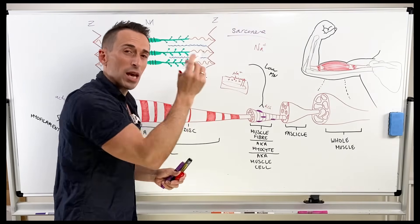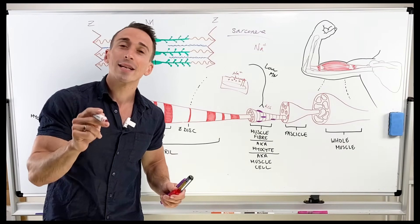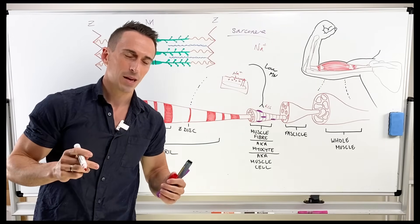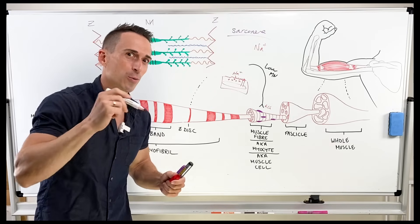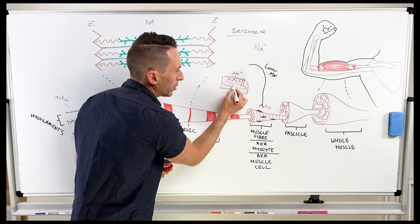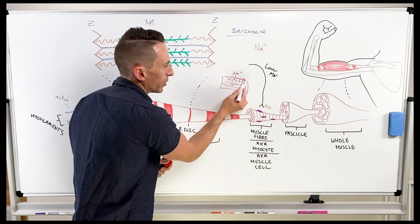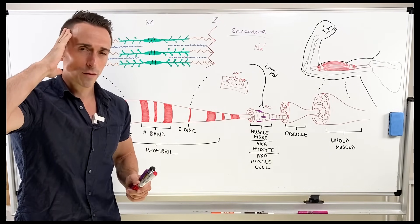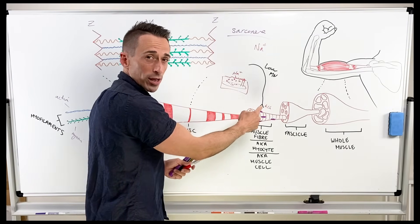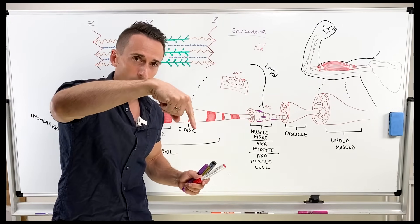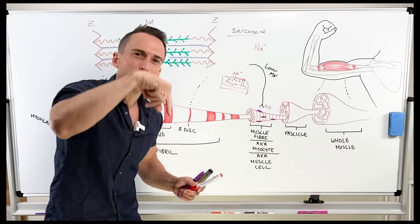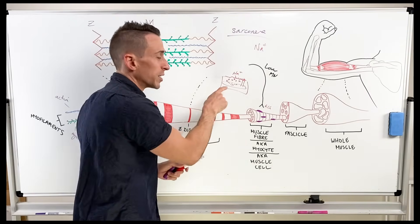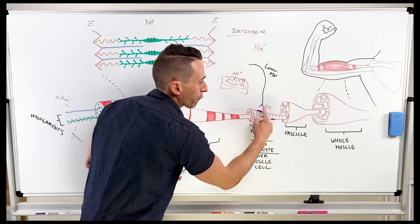The depolarization going down the T-tubules reaches something called the sarcoplasmic reticulum — that's the endoplasmic reticulum for muscle fibres. The sarcoplasmic reticulum stores calcium. Whenever calcium is released, muscle contraction will occur. The sarcoplasmic reticulum sits deep within the muscle tissue holding on to all this calcium. Once the depolarization signal is received, calcium is released. So to summarize: an action potential goes down the lower motor neuron, releases acetylcholine, which opens sodium channels, depolarizes the sarcolemma, travels down T-tubules, and tells the sarcoplasmic reticulum to release stored calcium, which now floats freely throughout that muscle fibre.